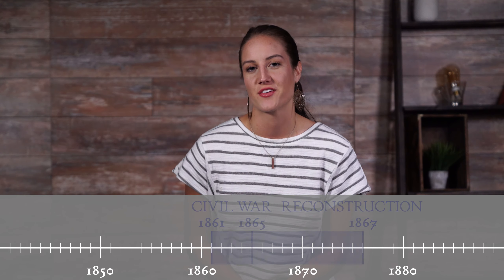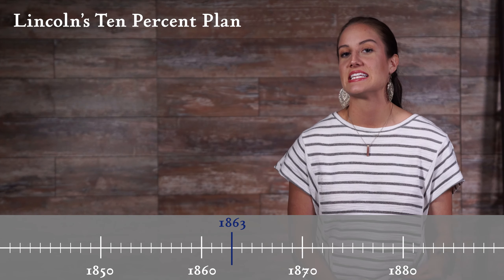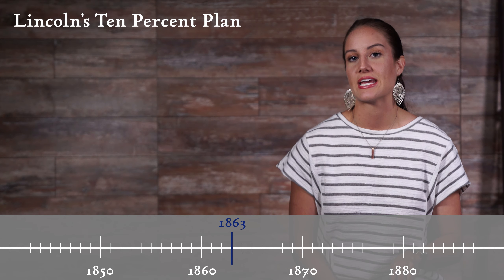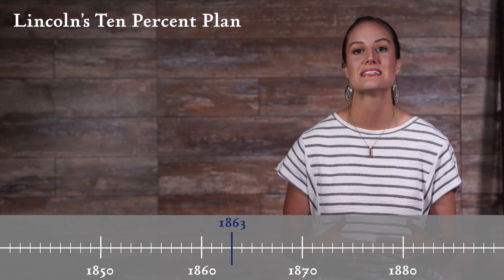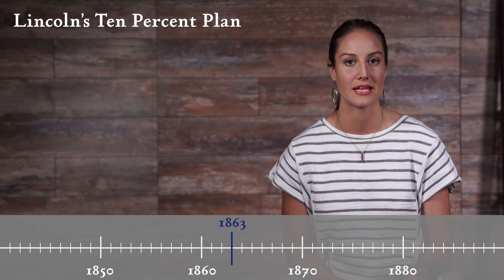Fast forward several years. The war was in full swing, and President Lincoln issued his Emancipation Proclamation January 1, 1863, in a tactical maneuver to win the war. On December 8, 1863, in a bid to end the bloodbath, Lincoln put forth his 10% plan.